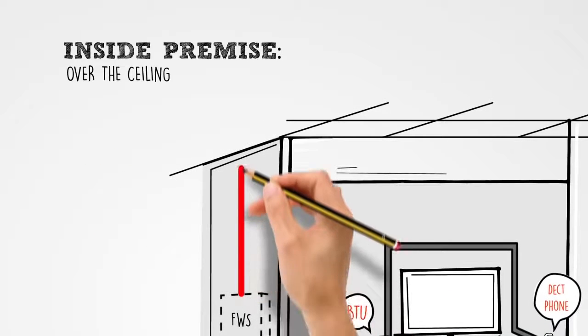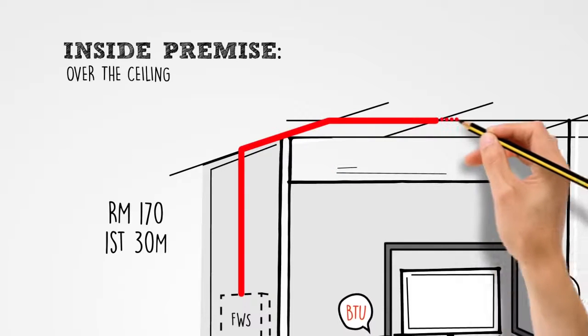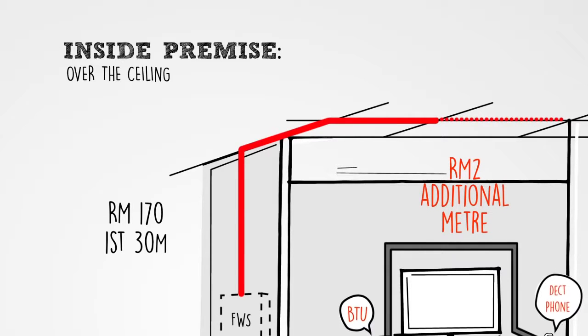If you opt for wiring over the ceiling, charges for the first 30 meters is RM170. For additional wiring, a fee of RM2 per meter will be incurred.